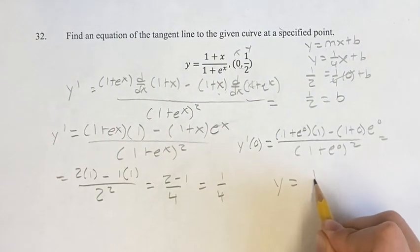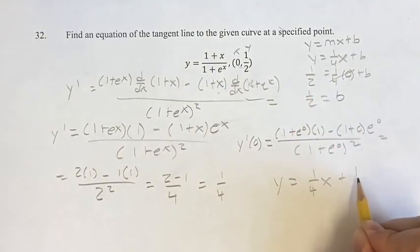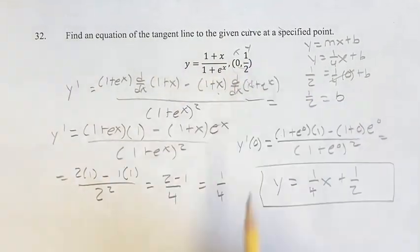So our final equation is y equals 1/4 x plus 1/2. That is the tangent line to the curve at this point.